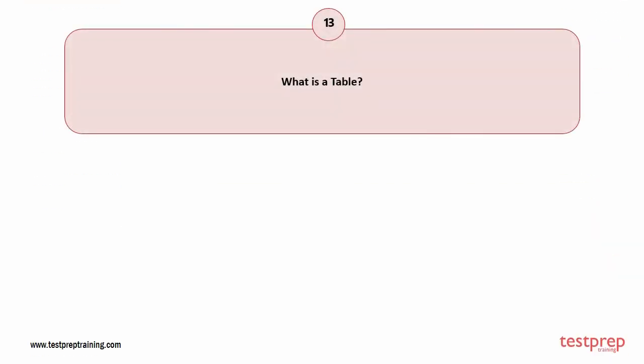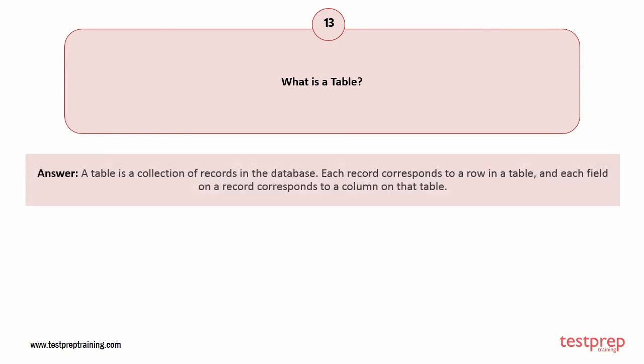Question number 13: What is a table? A table is a collection of records in a database. Each record corresponds to a row in a table, and each field on a record corresponds to a column on that table.